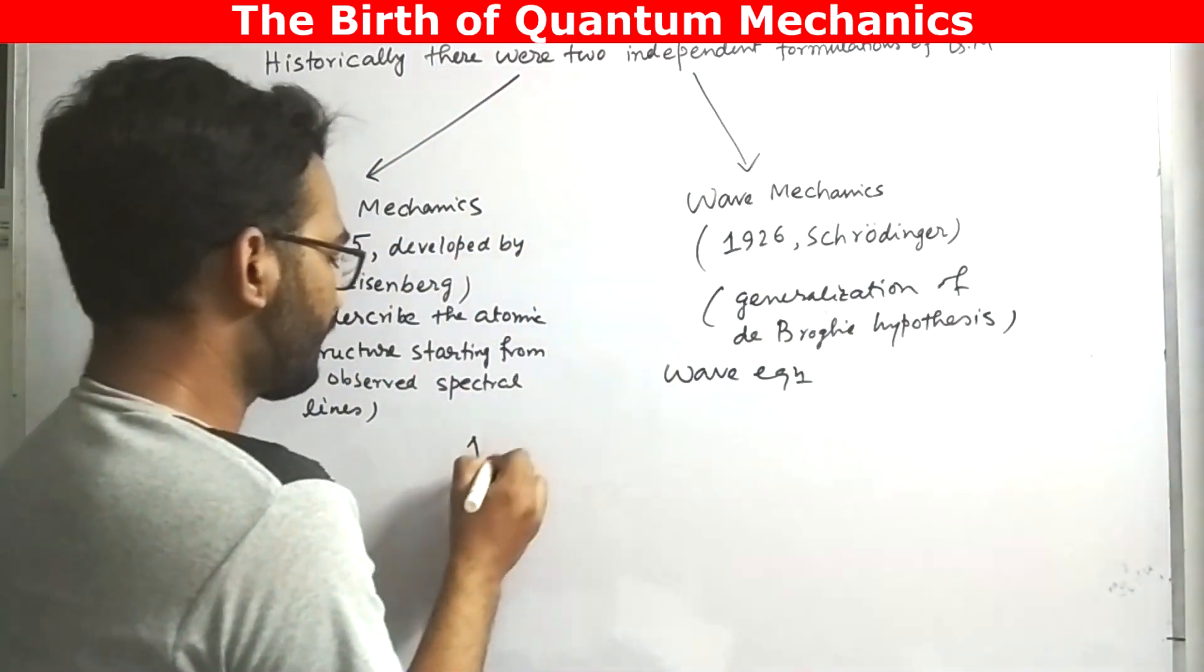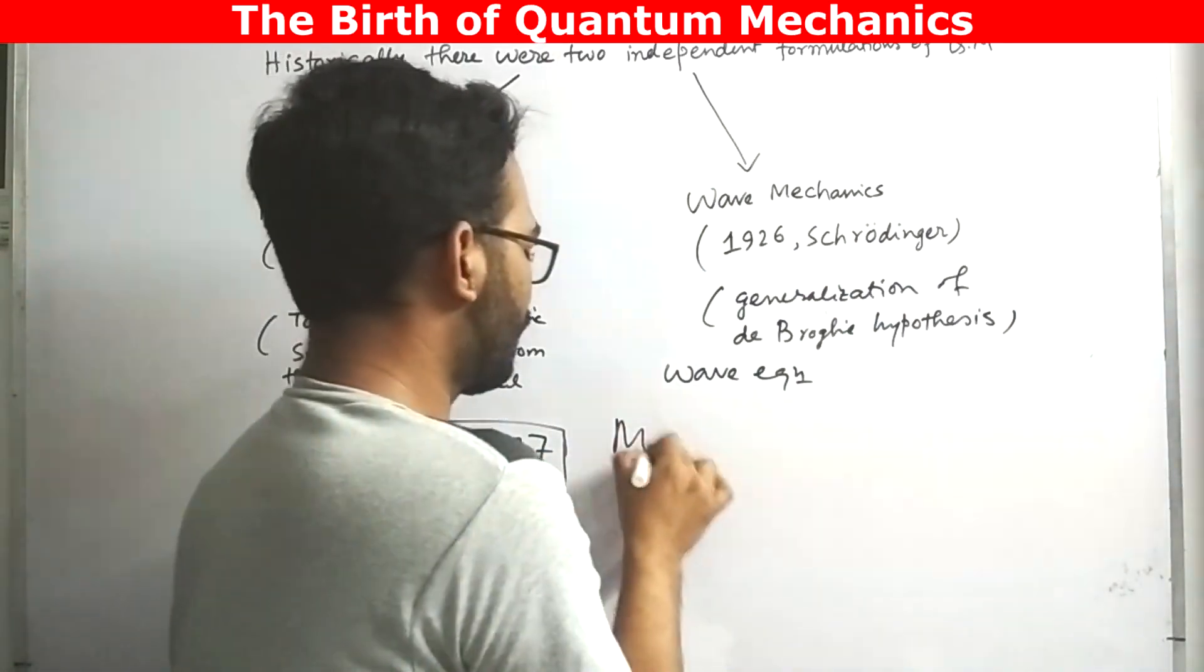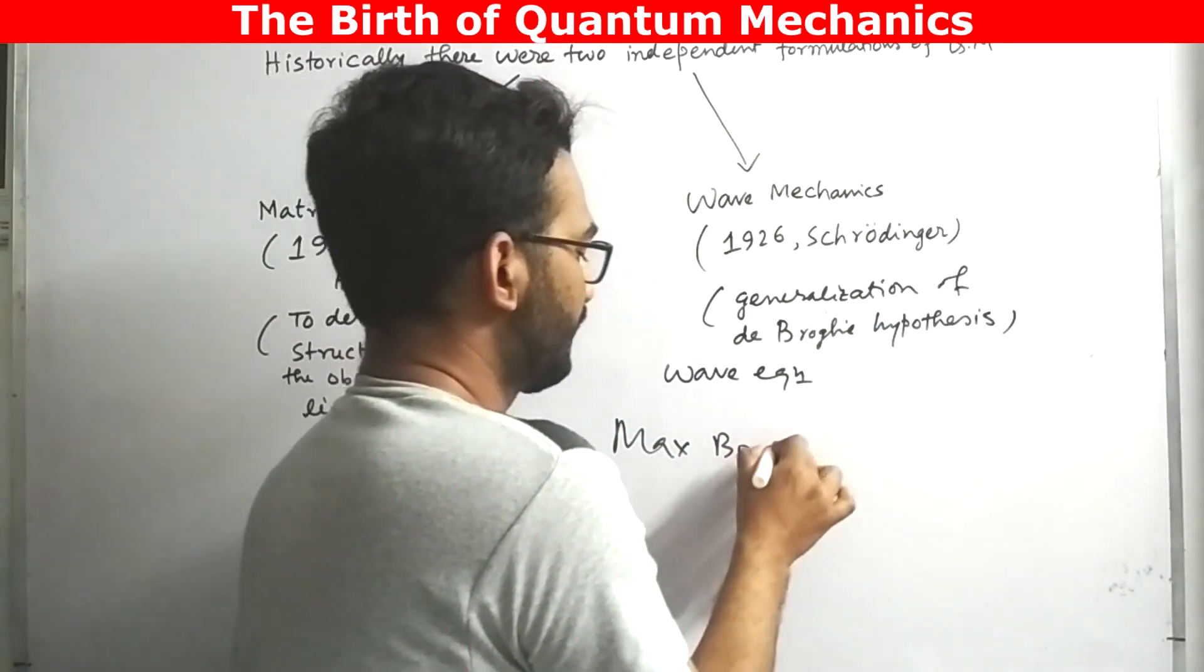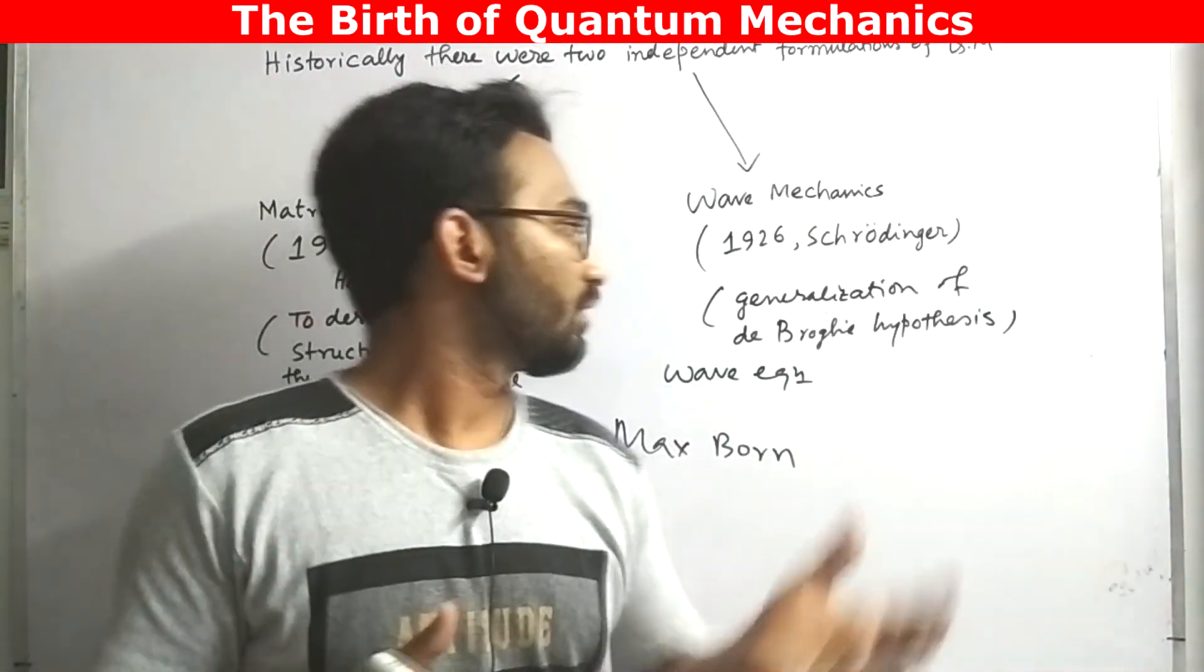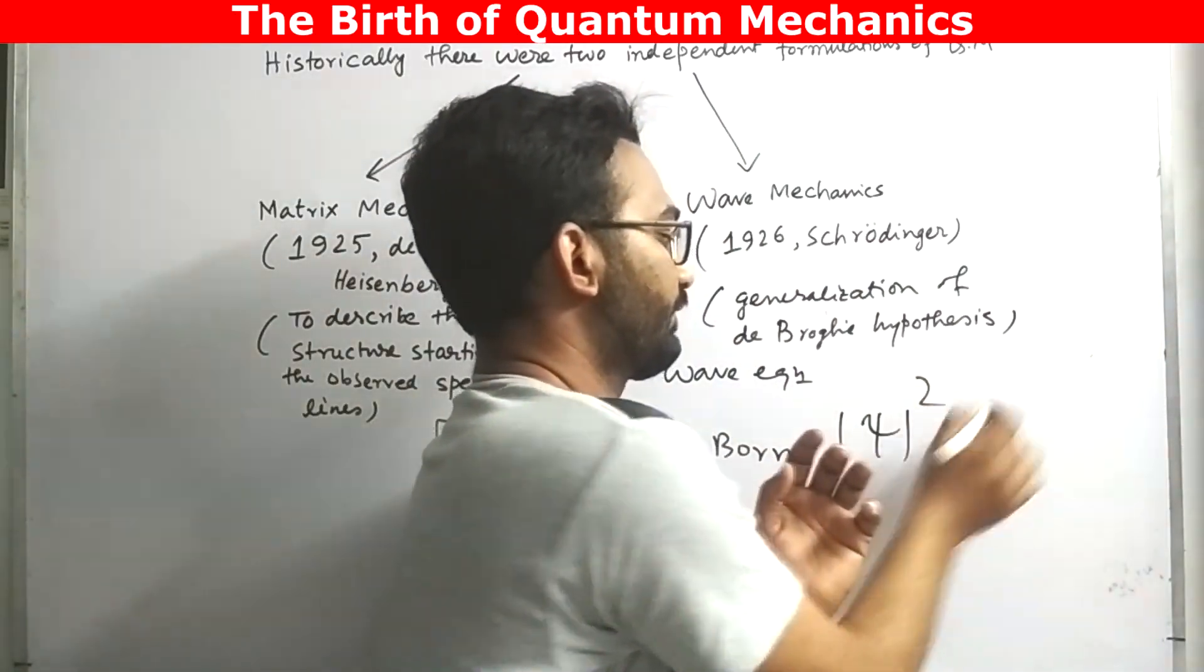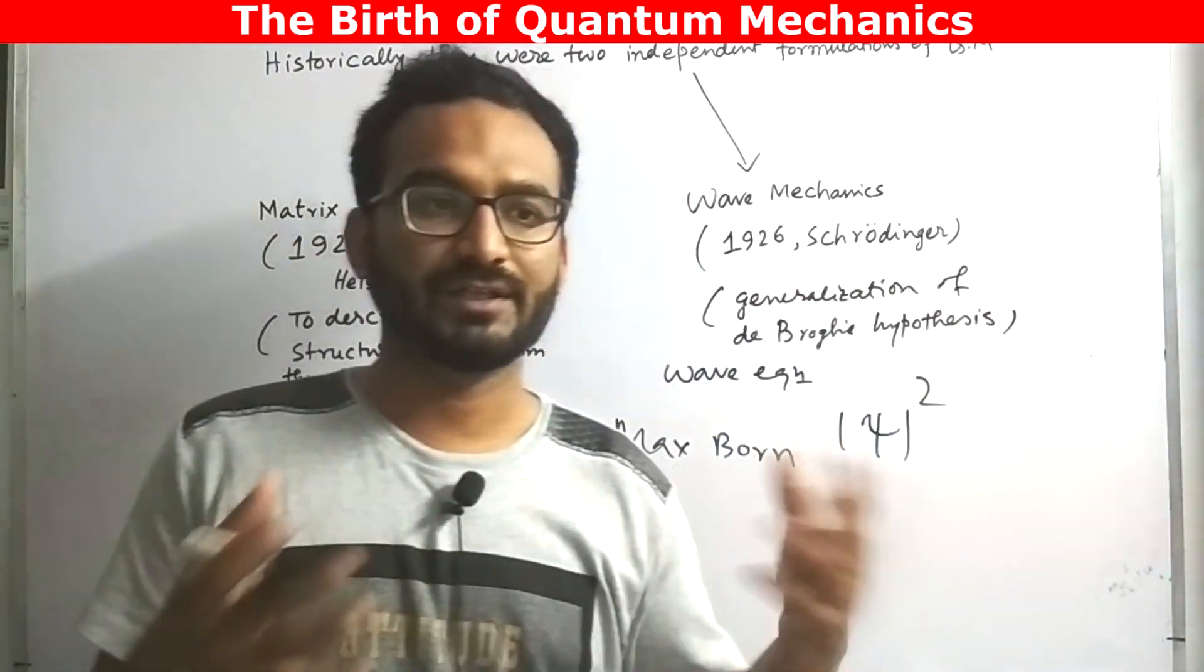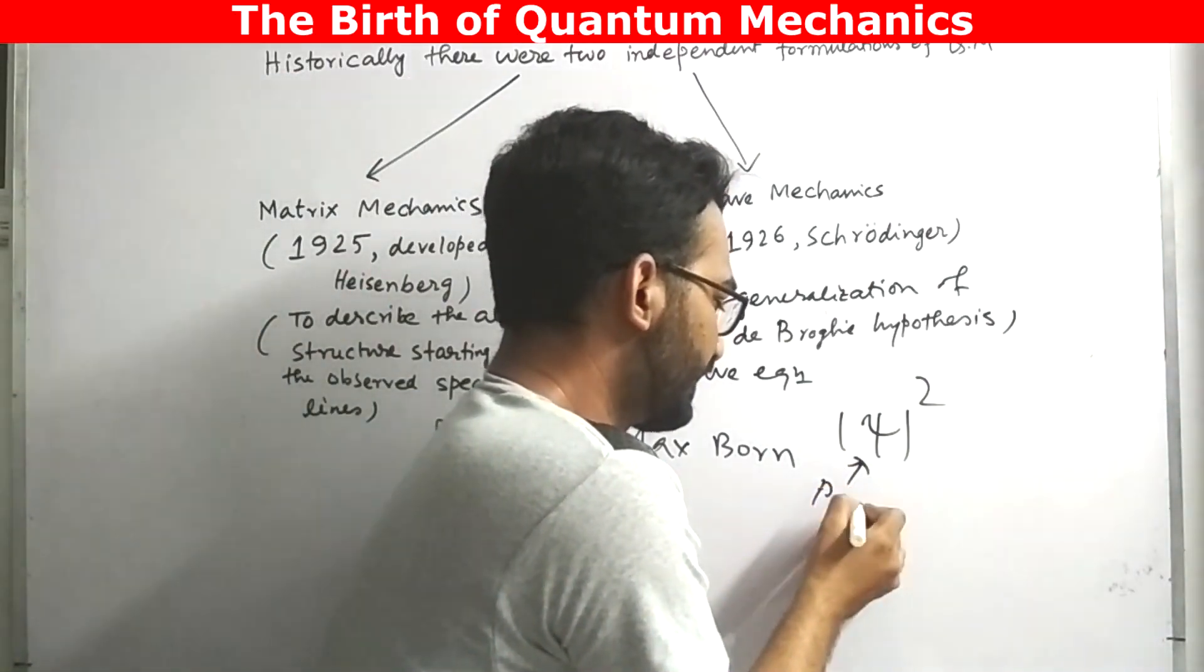In the year 1927, just after one year, Max Born gives his probabilistic concept of wave function. He just took the square of the wave function, which has been derived from the Schrödinger equation, and called it as probability densities.